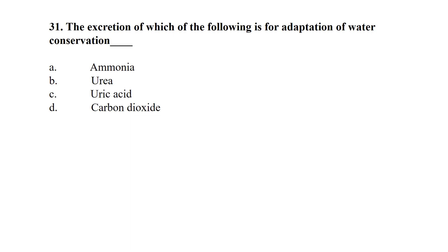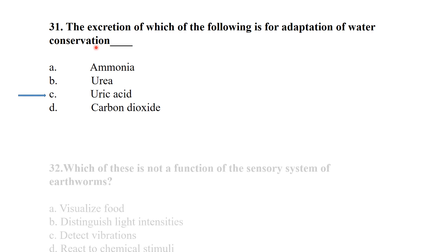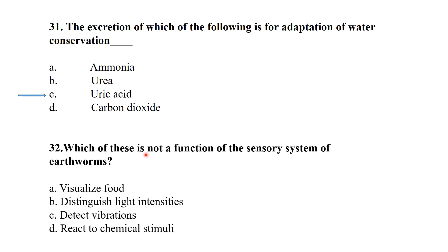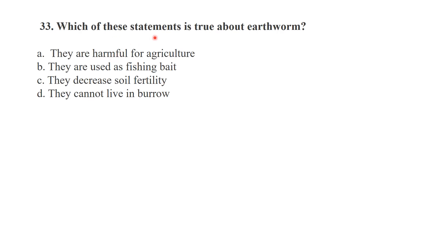The excretion of which substance is an adaptation for water conservation? Uric acid is excreted for water conservation. Visualizing food is not a function of the sensory system of the earthworm, as earthworms have no eyes.